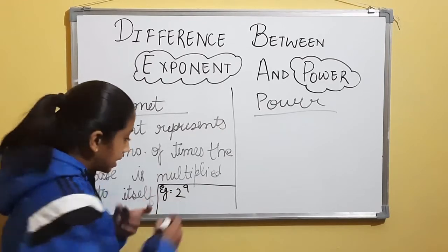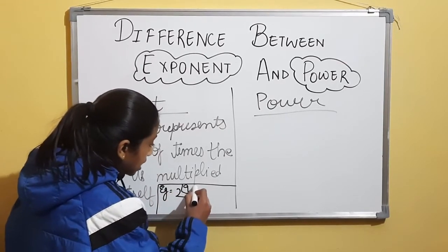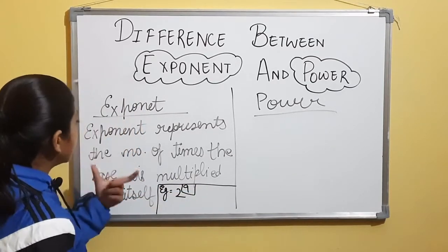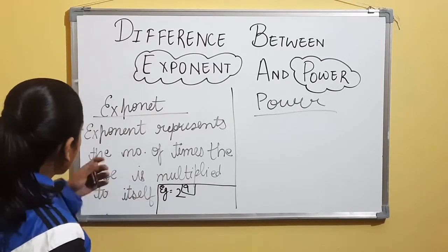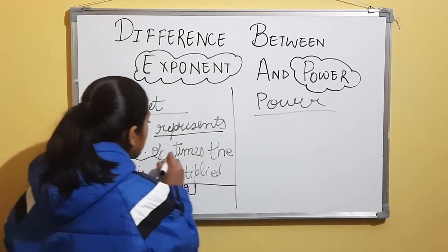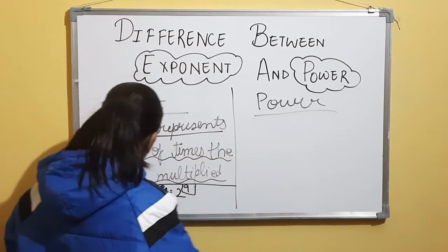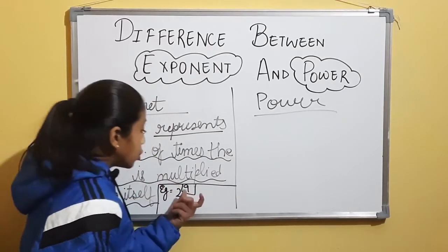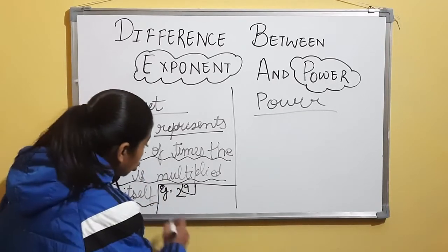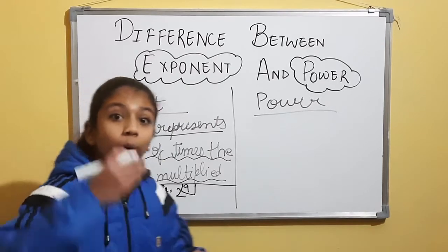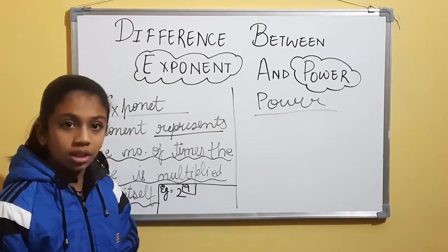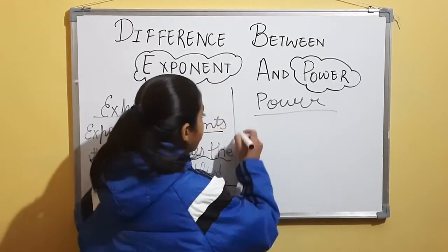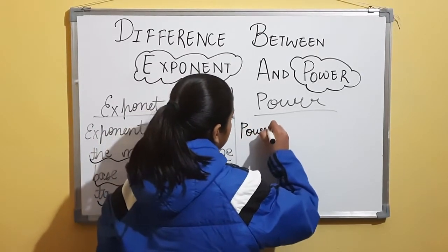Can you tell me what is the exponent in this number? In 2 raised to the power 9, the 9 is the exponent. Read this carefully once again: exponent represents the number of times the base is multiplied to itself. So 2 is the base, and the exponent 9 tells us that 2 is multiplying 9 times to itself.